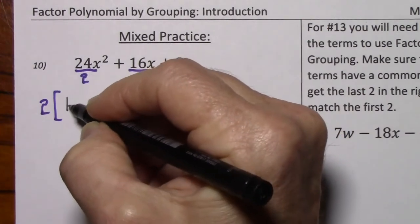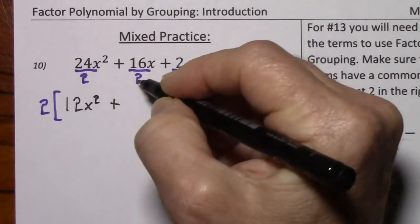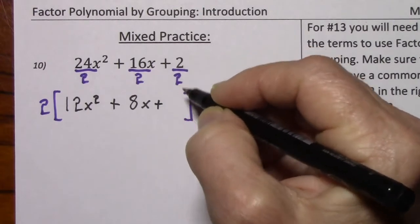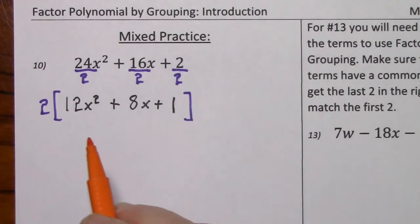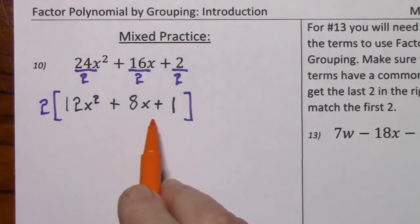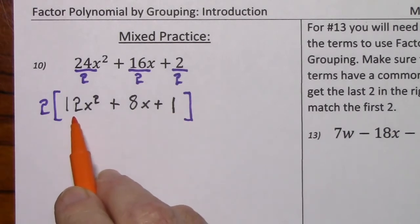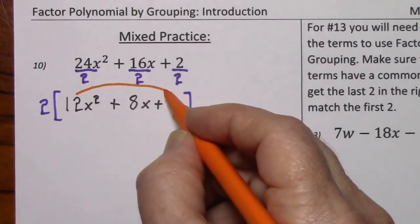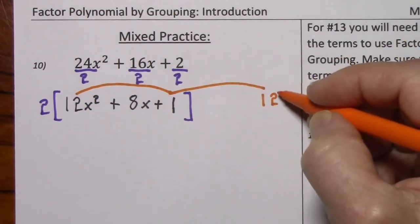Up here we would have 12x squared. Bring that down. 8x. Bring that down. And here we'll have 2 divided by 2, which is just going to be 1. Then paying attention to what's left inside parentheses, we have three terms with a leading coefficient other than 1, so we'll use factor by grouping. We multiply first times last and list the factors.